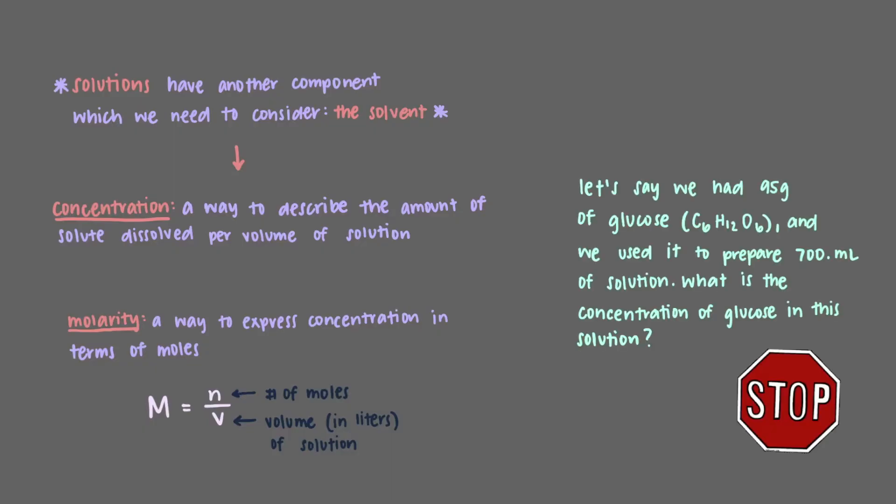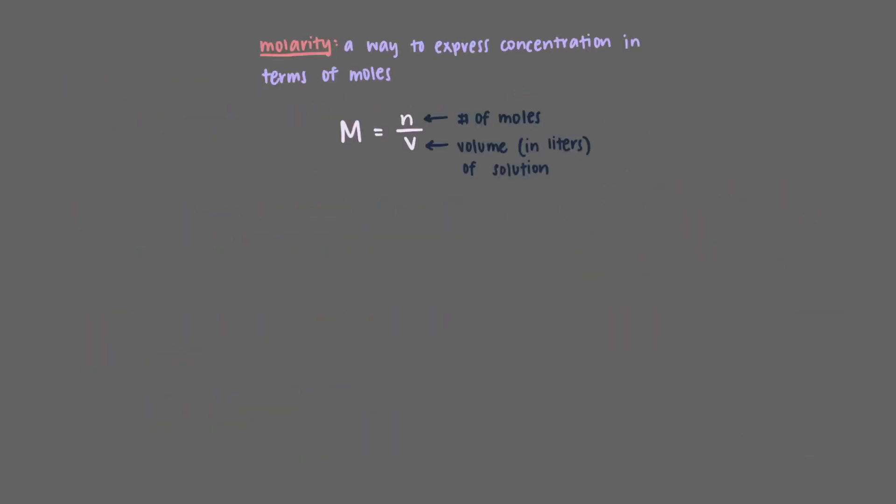Let's say we had 95 grams of glucose and we used it to prepare 700 mL of solution. What is the concentration of glucose in the solution? We said that molarity is equal to the number of moles over the volume of solution. This means we first need to convert the amount of glucose in grams into moles by using the molar mass of glucose. The molar mass of glucose is 180.16 grams per mole. When we multiply 95 grams of glucose with this conversion factor, we get that there are 0.527 moles in 95 grams of glucose.